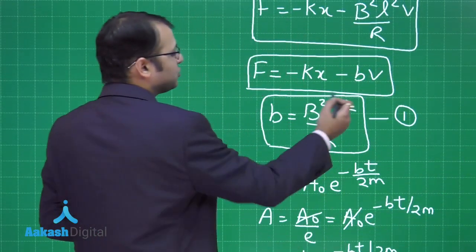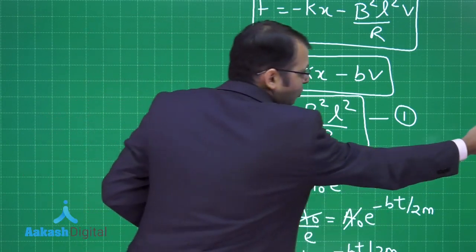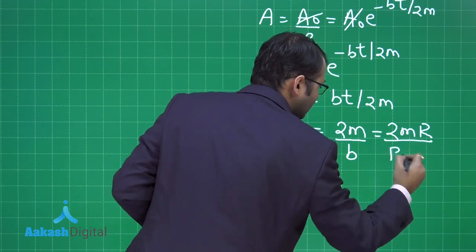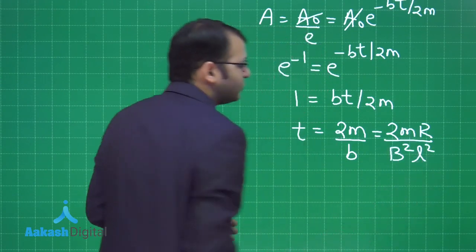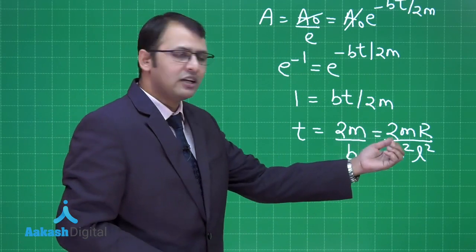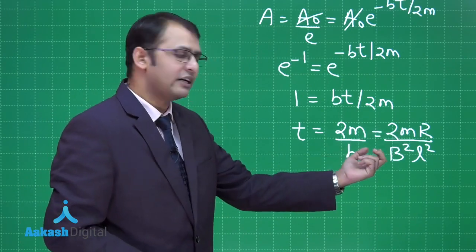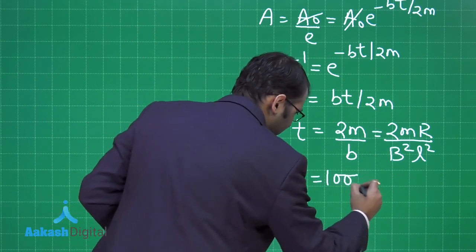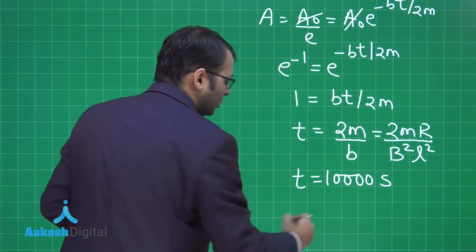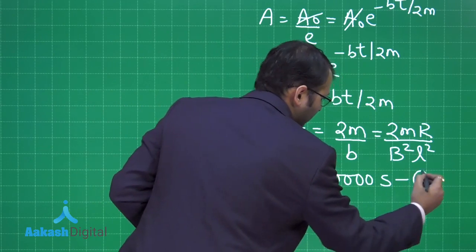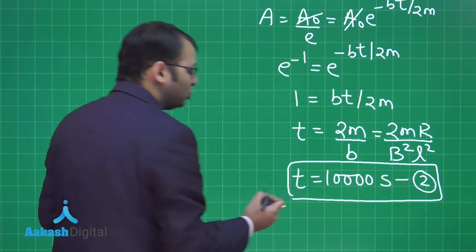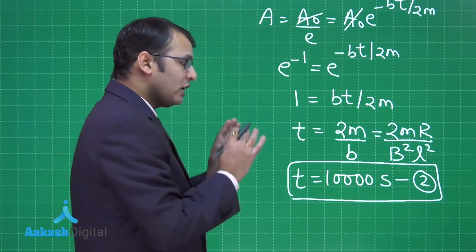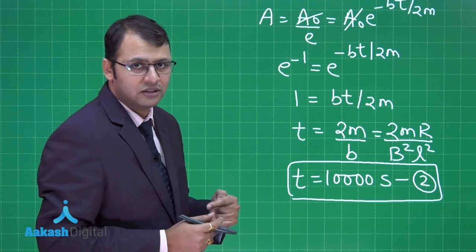Substituting the damping constant b equals B²L²/R, the time t becomes 2mR/(B²L²). With m equals 50 grams, R equals 10 ohms, B equals 0.1 tesla, and L equals 0.1 meters, substituting gives t equals 10,000 seconds. This is the time in which the amplitude reduces to A0/e.